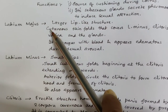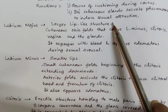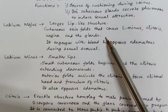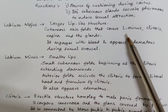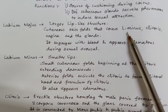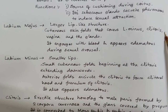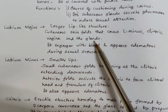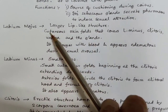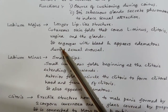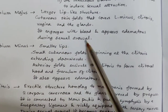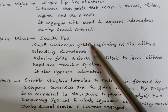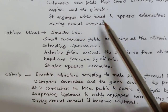Labia majora is the larger lip-like structure — cutaneous skin folds that cover the labia minora, clitoris, vagina, and the glands. It covers the entire external region and engorges with blood, appearing edematous during sexual arousal.